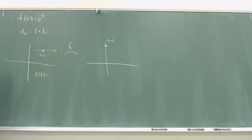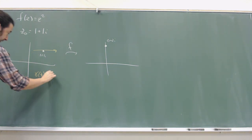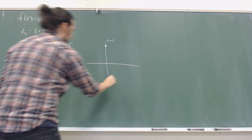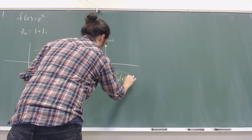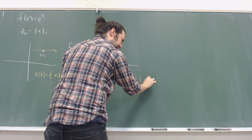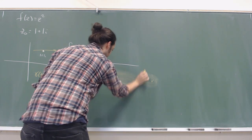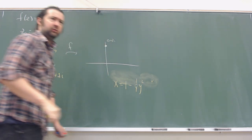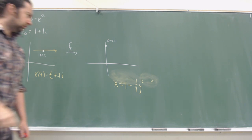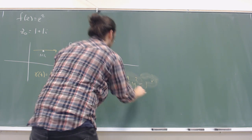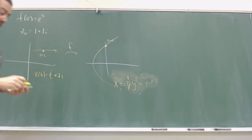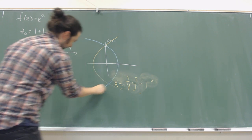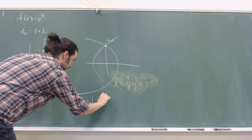We had this curve, gamma(t) = t + i, going in the x-direction. The image of that — f composed with gamma(t) — after elimination of parameters turned into x = (1/4)y² − 1, a parabola opening in this direction. Then we looked at the other curve, which turned into a parabola x = 1 − (1/4)y² opening in the other direction.